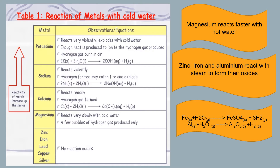Magnesium reacts very slowly with cold water but reacts with hot water — if you heat the mixture, the reaction speeds up. Zinc, iron, and aluminium do not react with liquid water; they react with steam, which consists of highly energetic particles, and form their oxides. Copper, silver, and lead do not react with water at all. Again, as we go down the reactivity series, the reactivity of metals decreases.